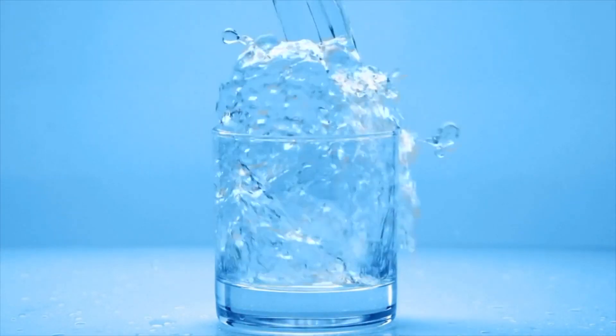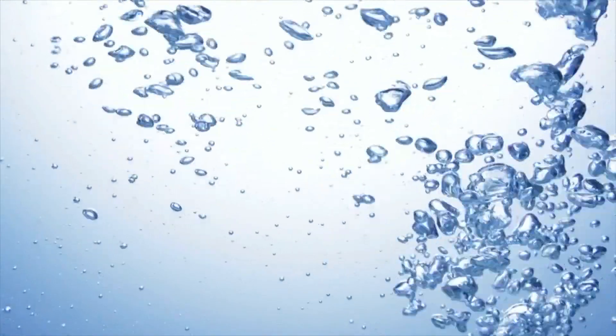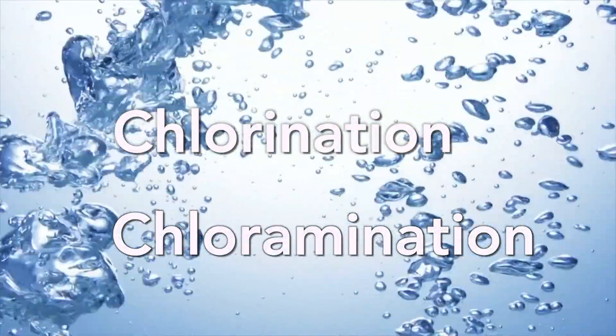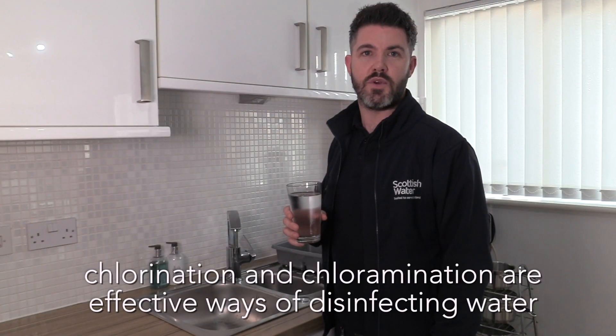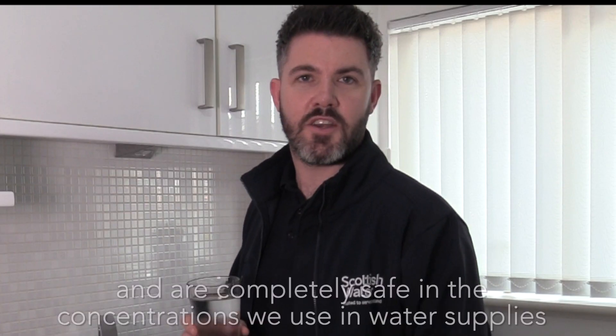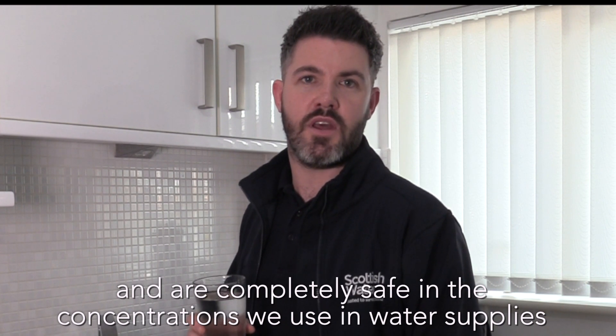Scottish Water use two main disinfection processes in water treatment, chlorination and chloramination. Both chlorination and chloramination are effective ways to disinfect the water and are completely safe for humans in the concentrations we use in our drinking supplies.